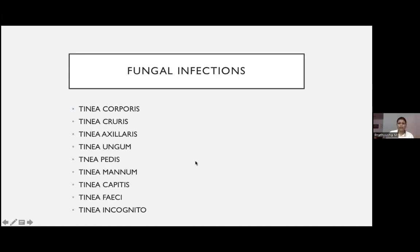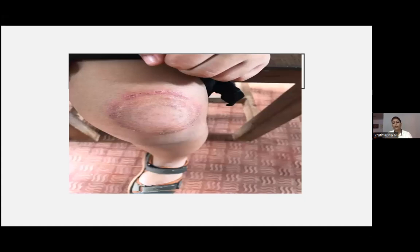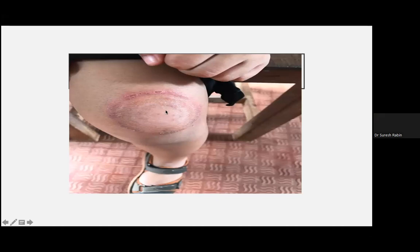The next superficial fungal infections are tinea corporis, cruris, axillaris, unguium, pedis, manum, capitis, faciei, and incognito. The typical picture of tinea corporis shows a red (erythematous) scaly lesion with peripheral activity and central clearance — this is typical of tinea. Since it is on the body, we call it tinea corporis.